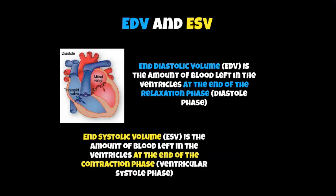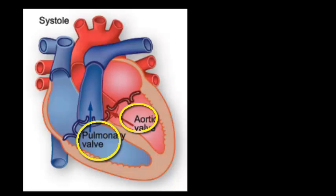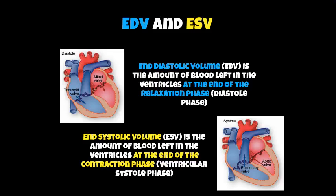ESV stands for End Systolic Volume, and that's the amount of blood left in the ventricles at the end of the contraction phase — the ventricular systole phase. During the diastole phase we fill up the two atria with blood; the blood then moves to the ventricles, and then the ventricles contract and push all that blood through the pulmonary artery and the aorta to move to the rest of the body. ESV is any blood remaining after that contraction phase. You just need to know the definitions of those two things: End Diastolic Volume, EDV, and End Systolic Volume, ESV.